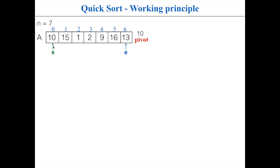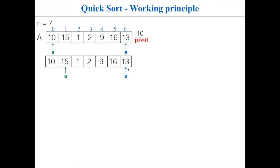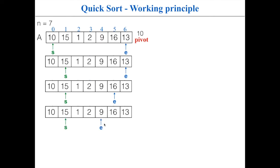Starting the first pass: 10 is compared with the pivot and satisfies the less-than-or-equal condition, so increment start. Now start points to 15, which is greater than the pivot, so we stop. Moving to the end iterator: 13 is greater than 10, condition is true so decrement end. 16 is also greater than the pivot so decrement end again. Now 9 is less than the pivot so we stop the end iterator. Both start and end iterators have stopped.